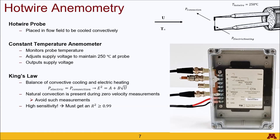For the hot wire anemometry, we rely on a hot wire probe placed within the flow field to be cooled convectively by the air flowing across it. This probe is controlled using the constant temperature anemometer, which monitors the temperature of the hot wire probe and maintains it at 250 degrees Celsius. In order to do that, it provides an increased voltage to compensate for the convective cooling, providing a heat balance.